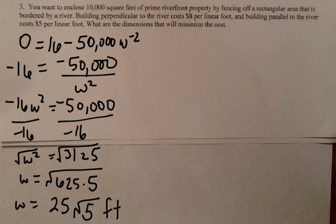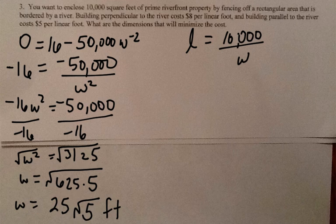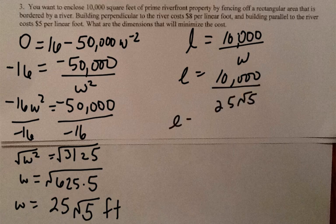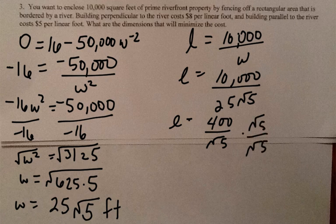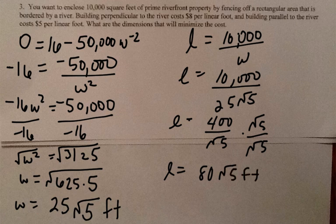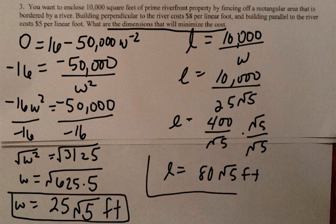Now we need the length. Length equals 10,000 divided by w. So 10,000 divided by 25 square roots of 5 gives 400 over the square root of 5. Rationalizing that gives 80 square roots of 5 feet. The problem asks for the dimensions that minimize cost, so the dimensions are the length and the width.